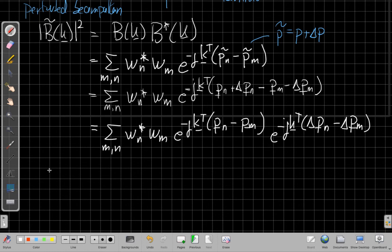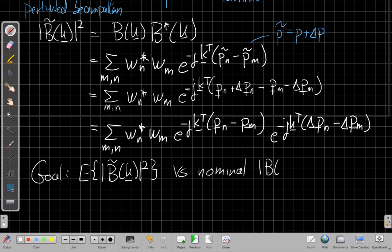So we'd say our goal now, now that we've got this far, is we want to look at what is the expected value of the perturbed power pattern as a function of wave number versus the nominal. How different is, on average, how different is this perturbed thing from the original ideal nominal power pattern? So that's what we're trying to look at.